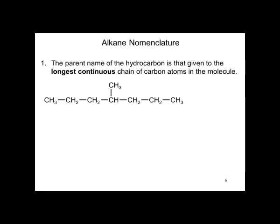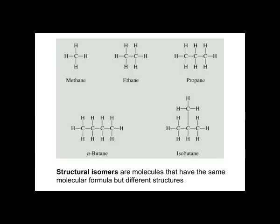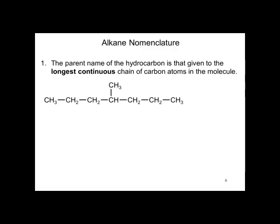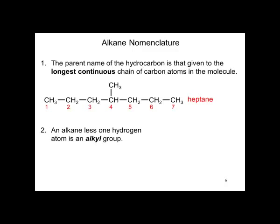The parent name of the hydrocarbon is that given to the longest continuing chain of carbon atoms in the molecule. This molecule has seven carbon atoms — it is called heptane. An alkane less one hydrogen atom is an alkyl group, so methane becomes methyl. The number four carbon has a methyl substituted on it, hence the molecule is referred to as 4-methylheptane. Here is a table of common alkyl groups — you should learn their names and their structures.